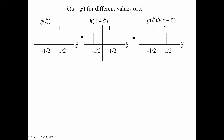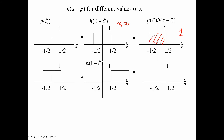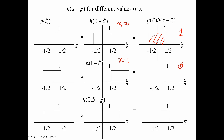This slide summarizes what we've just done. At x equals zero, the area of overlap is one. At x equals one, the area of overlap is zero. And at x equals one-half, the area of overlap is one-half.